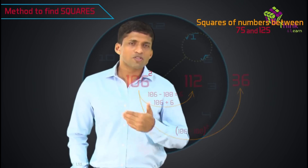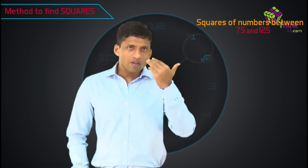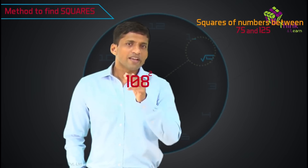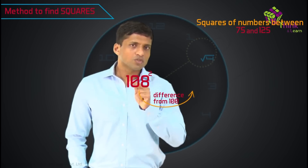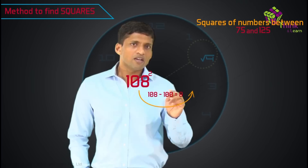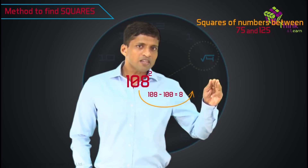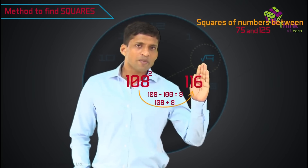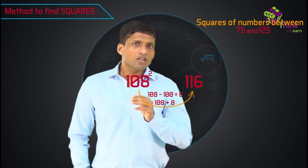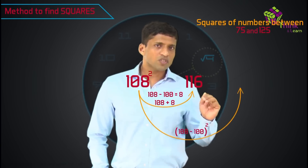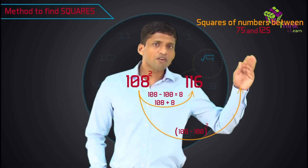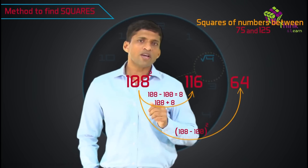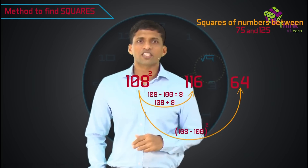Let's take one more example. To find 108 square: take the difference from 100 — 108 minus 100 is plus 8. Add it to the number itself — 108 plus 8 is 116, which are the first three digits. Square of the same difference — 8 square is 64 — written as the last two digits. So 108 square is 11664.